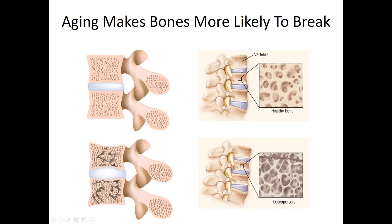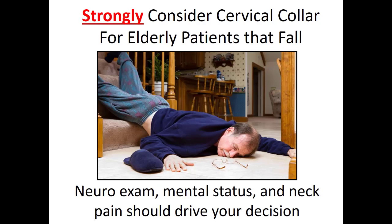In a young, healthy spine, the vertebral column is sturdy, but as people age and the trabeculi become bigger and start to fracture, the vertebral bodies begin to compress and actually physically get shorter — which is why people get shorter as they get older. In elderly patients with brittle spines and brittle necks, consider a cervical collar in every fall, especially if they're complaining of pain or have a mechanism suggestive of a spinal cord or neck injury.